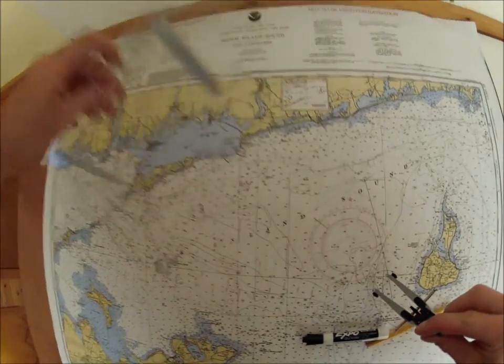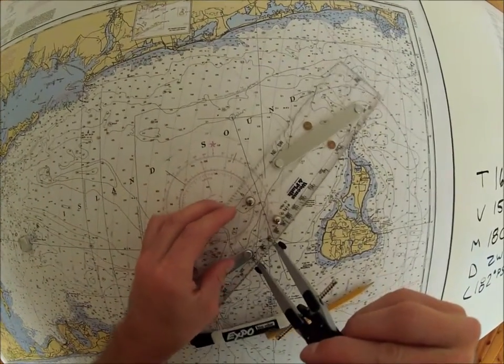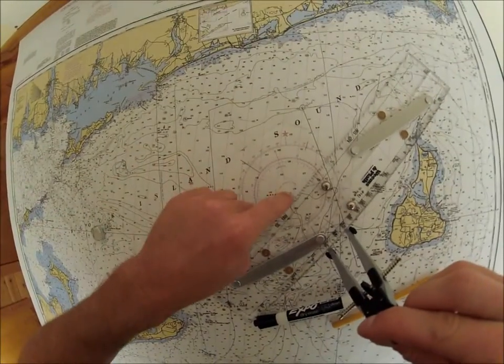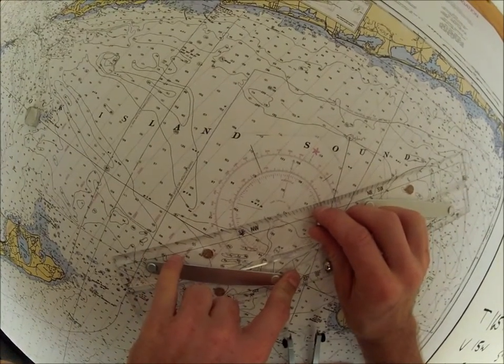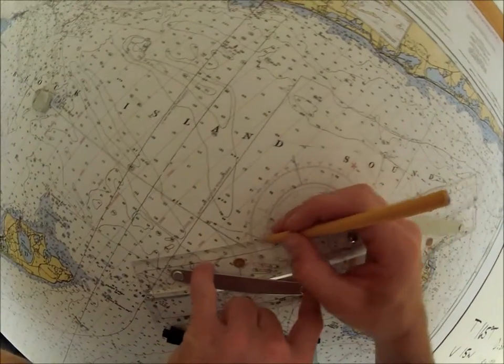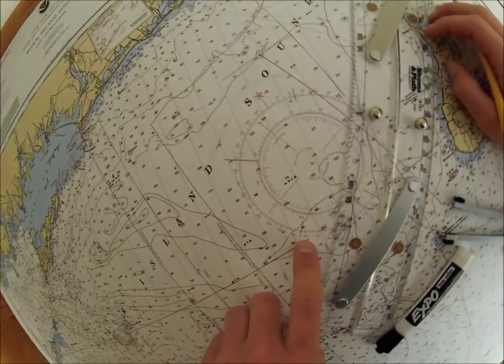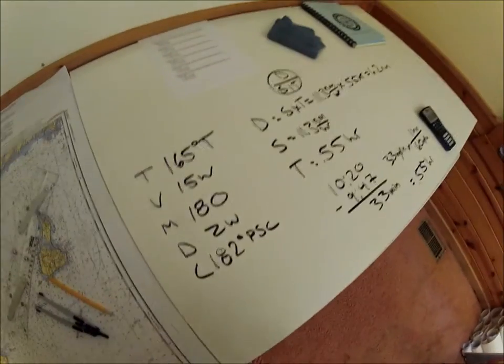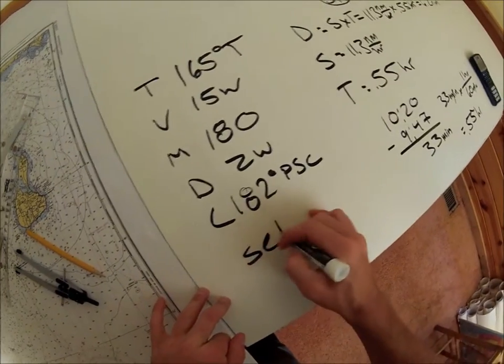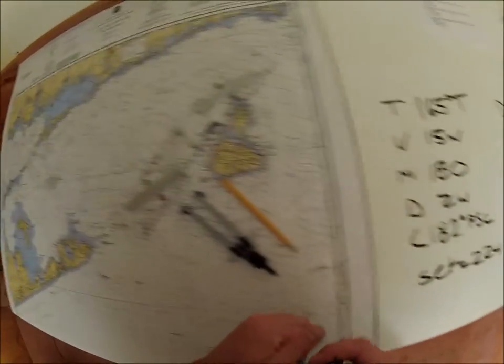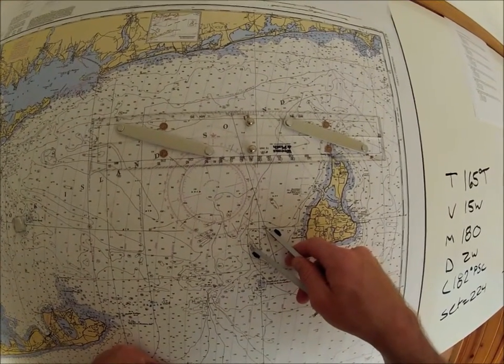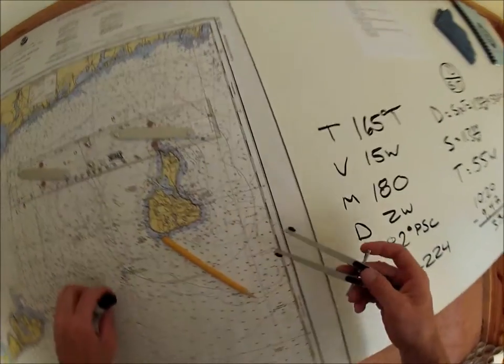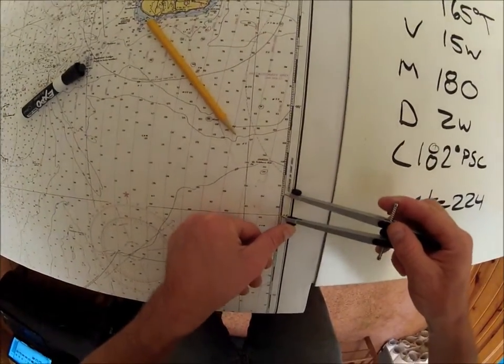So now all we need to do is find the set and drift. Okay, current pushed us this way, so we go from the set and drift, from the center toward where the current pushed us, from the center. This looks like 224, so we got a set of 224.